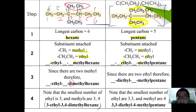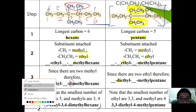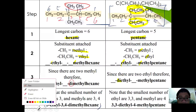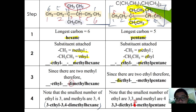Since there are two ethyl groups, we use the prefix 'di' giving diethyl. For numbering, reading from either direction gives carbon 3 as the lowest number for the ethyl groups. The two methyl groups are on carbon 2. Therefore the correct name is 3,3-diethyl-2-methylpentane.